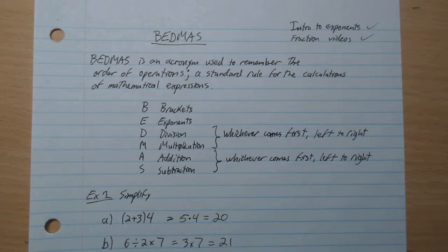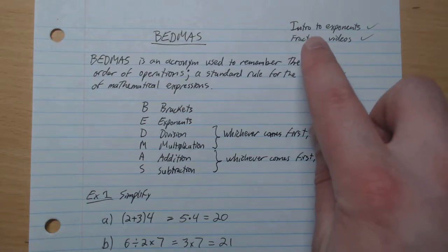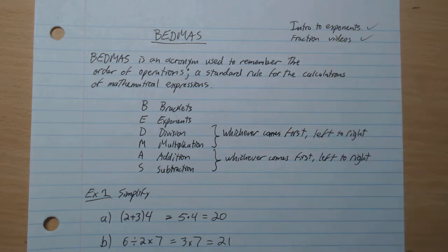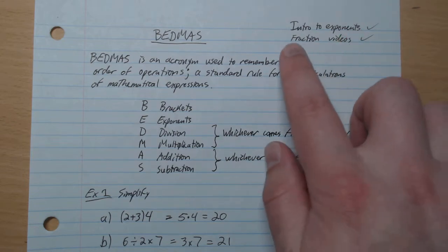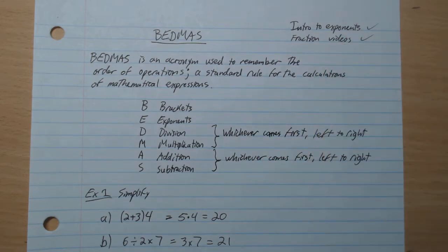BEDMAS is an acronym used to remember the order of operations. It's a standard rule for the calculations of mathematical expressions. Before we get into it, I want to comment that if you've seen the intro to exponents video, as well as the grade 8 fraction videos, that'll make this lesson for today a lot easier.